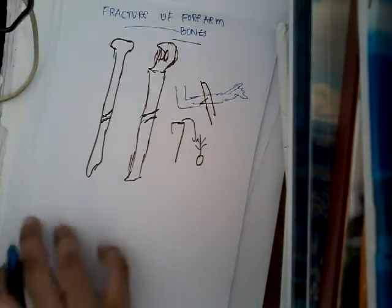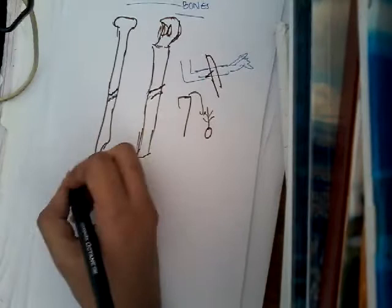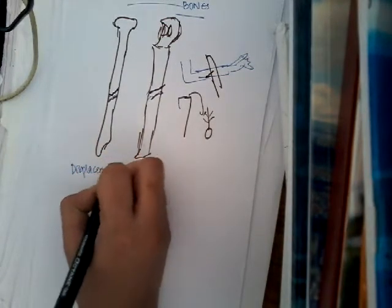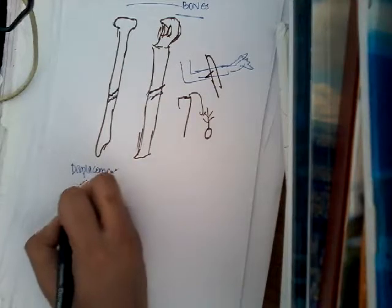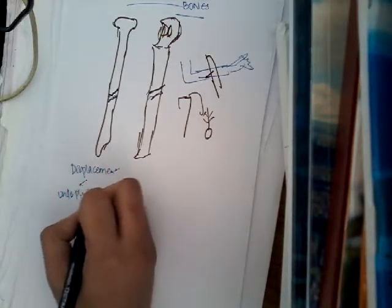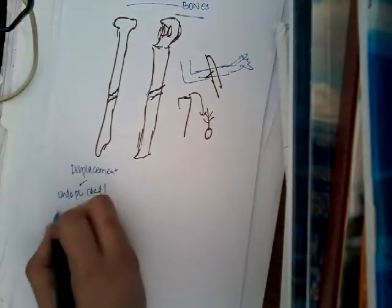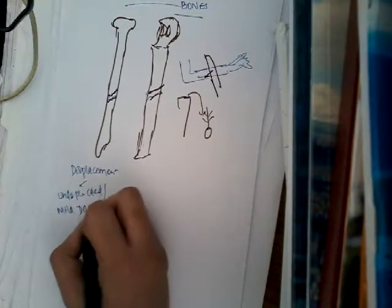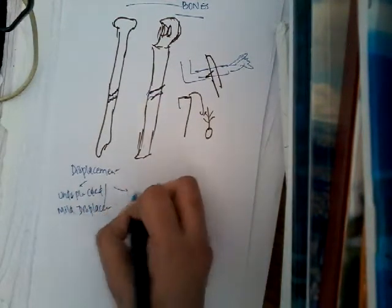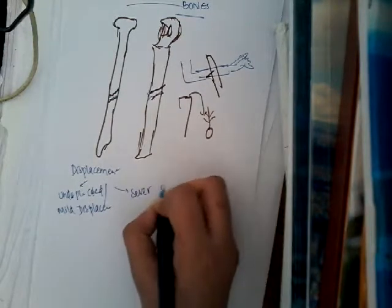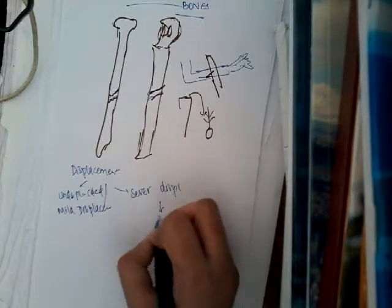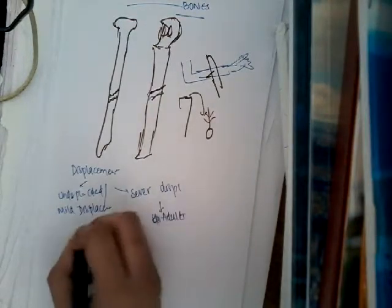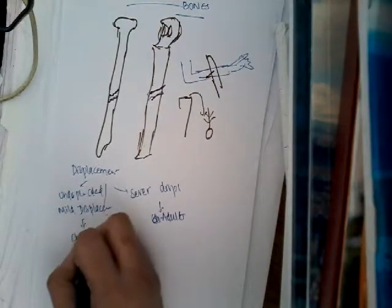Now let us learn about the displacements. Mostly it is undisplaced or mildly displaced. Severe displacement can also be seen. Severe displacement is most common in adults, whereas in children, mild or undisplacement is more common.